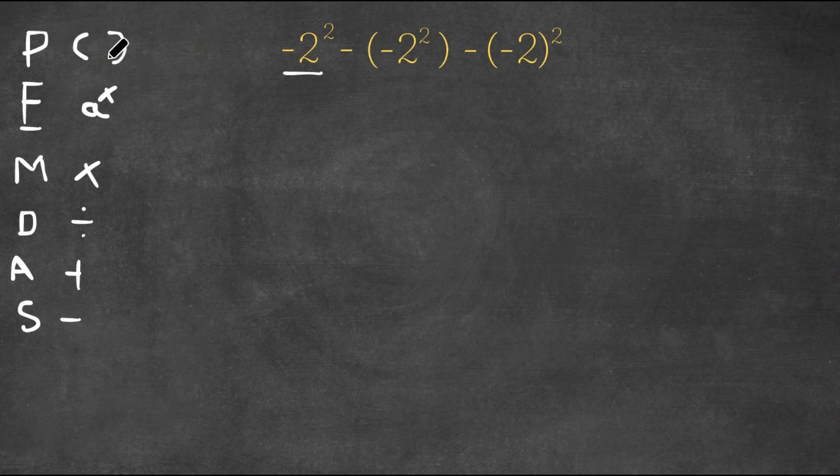So as you can see, we first look for parentheses. And since we're solving this term first, there actually are no parentheses. So then we're going to go ahead and look for exponents. And as you can see, 2². That's an exponent. So that's what we first do. We first do 2².